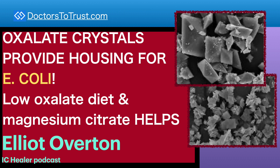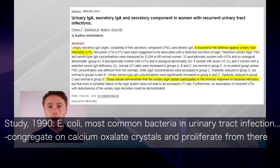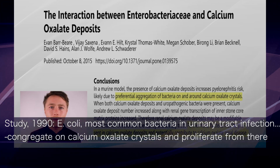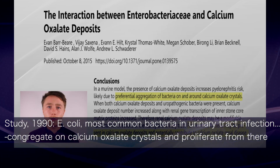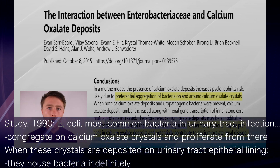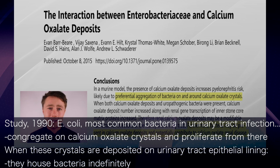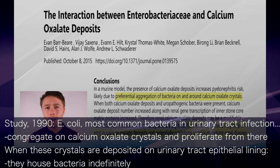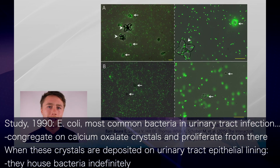One recent study actually showed that E. coli, which is the most common type of bacteria that you find in a urinary tract infection, could essentially selectively aggregate on and around the calcium oxalate crystals and proliferate from that point. So with that in mind, if oxalate microcrystals are deposited in the epithelial lining of the urinary tract and they can essentially act as houses for bacteria, then it would make sense as to how certain bacteria can stick around indefinitely.